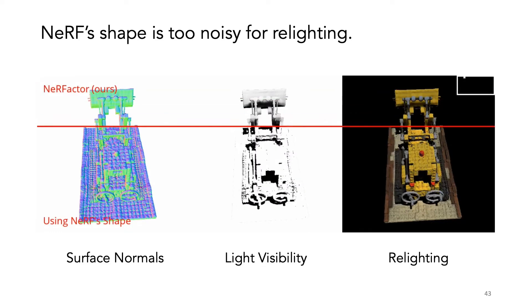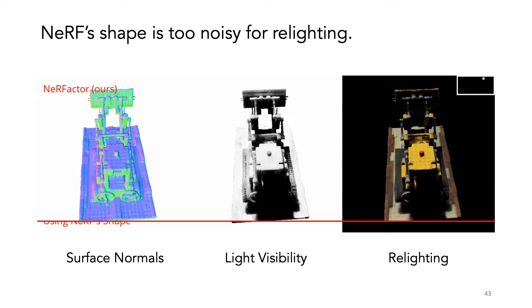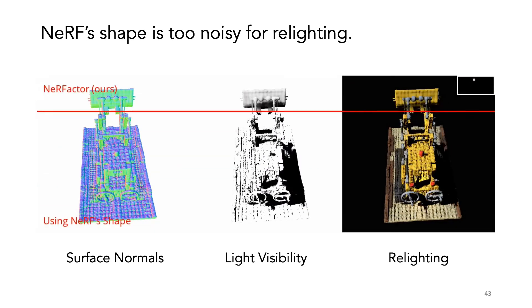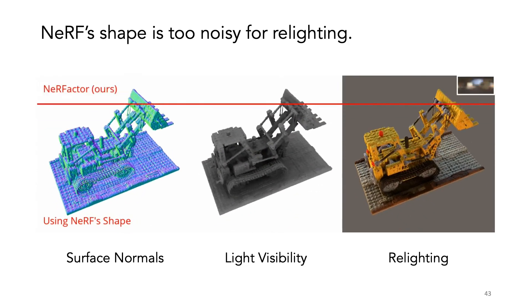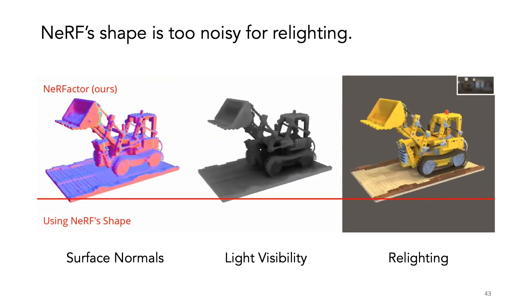We now study the importance of each model component. Here we fix the shape to NeRF's shape, but still estimate reflectance and illumination. Directly using NeRF's shape leads to a lot of noise in the rendering due to the bumpy geometry.